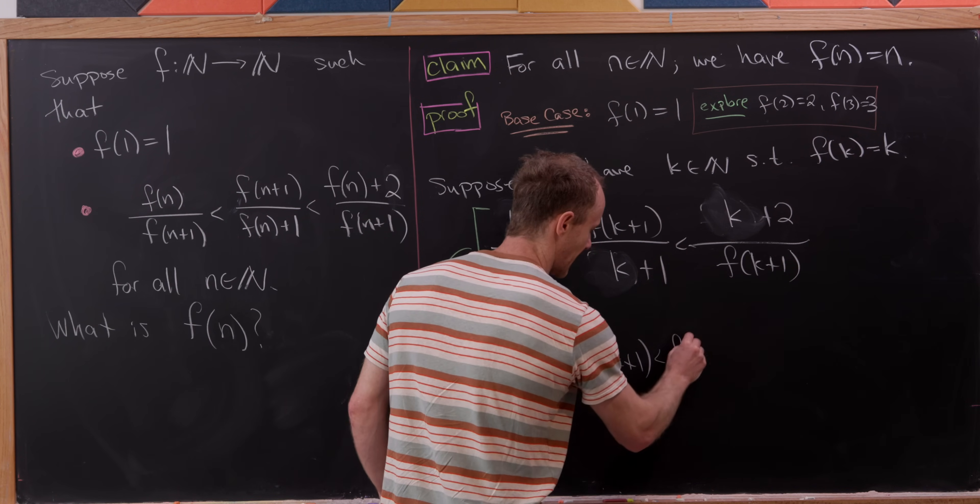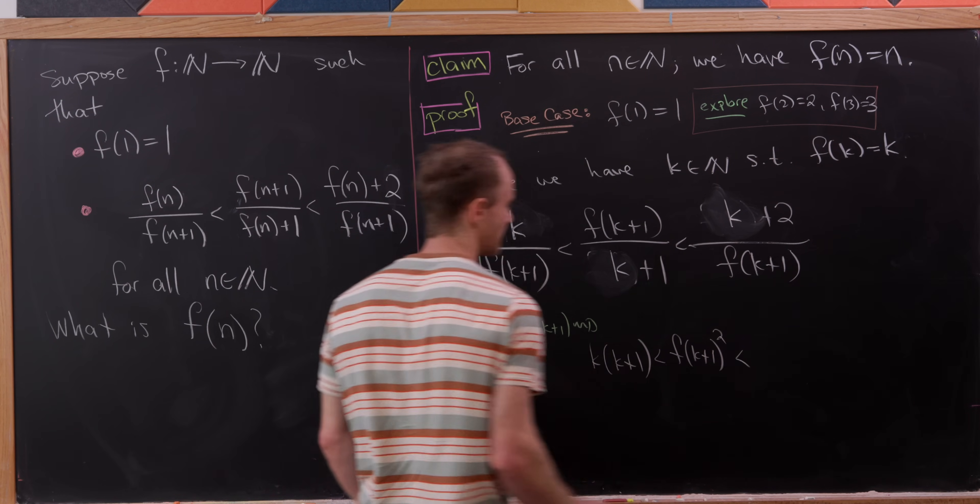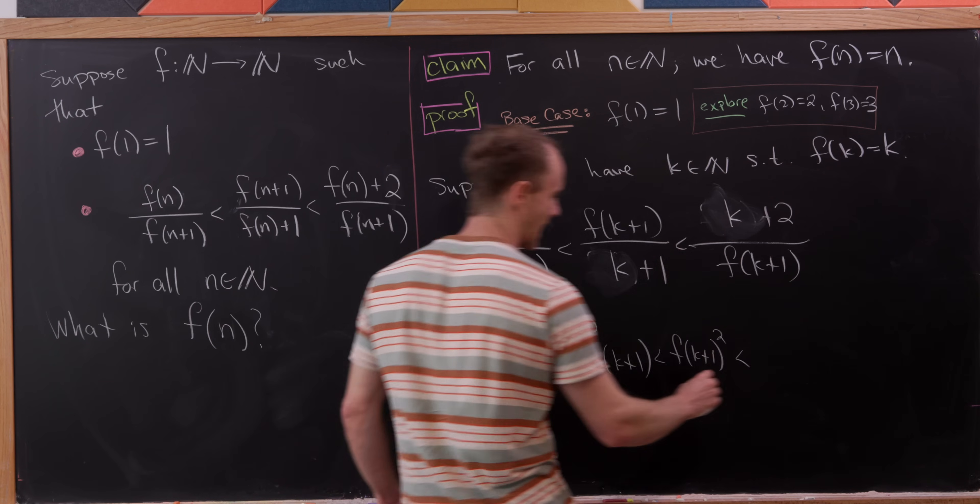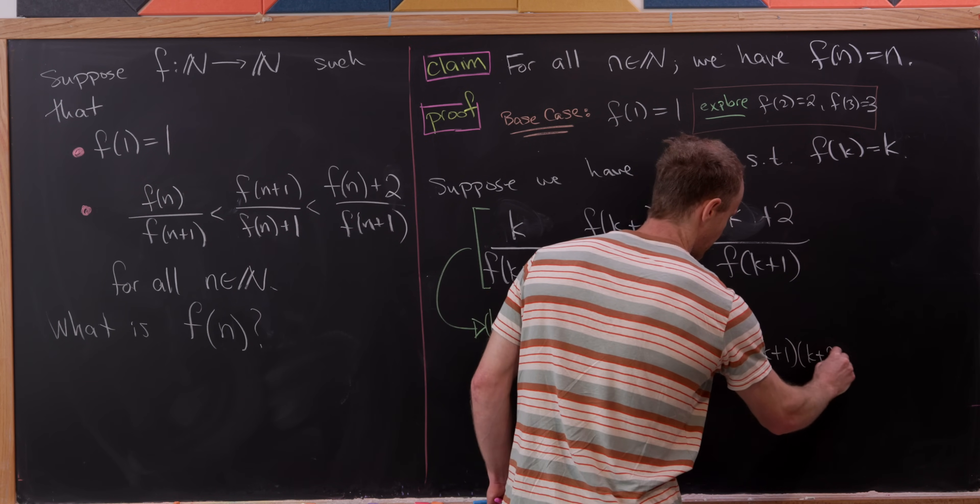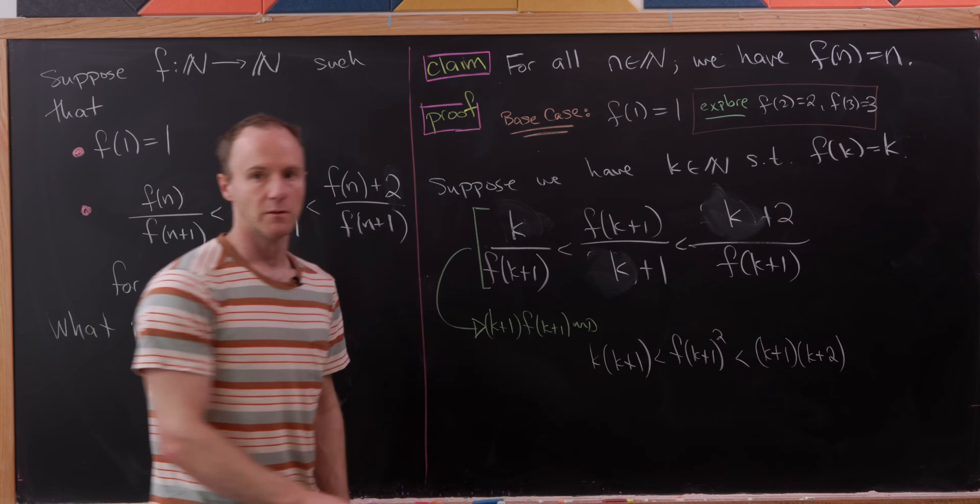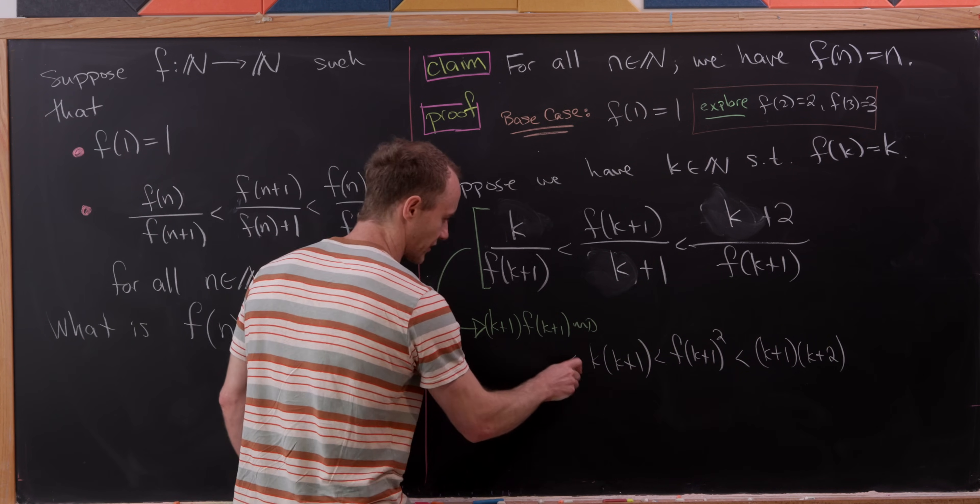In the middle we have f of k plus one squared, and then on the right we're going to have k plus one times k plus two. But now let's extend these off in either direction.